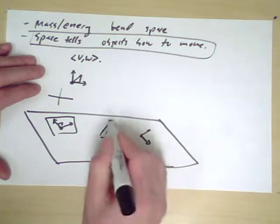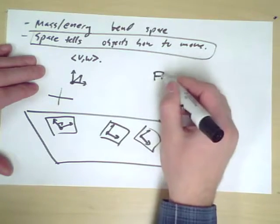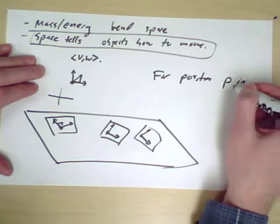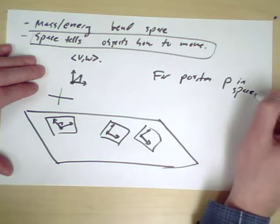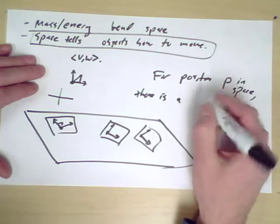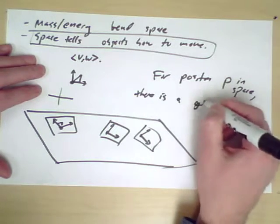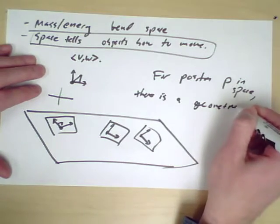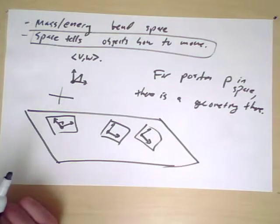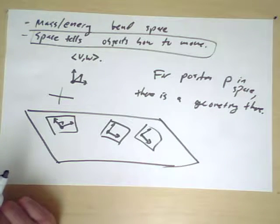So what we need to do is say for each position P in space, there is a geometry there. And each geometry is essentially the same in the sense that it looks like Euclidean geometry at that point. However, that geometry can vary from place to place.